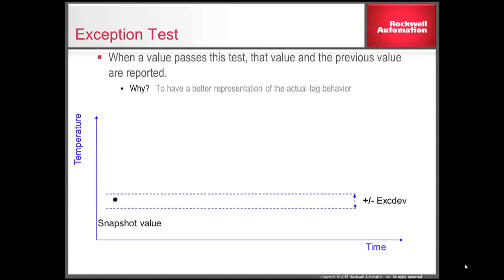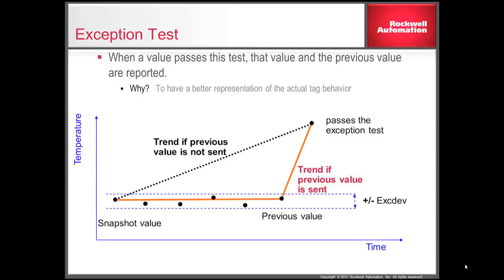The first step is the exception test. This test filters all values that only differ slightly from the previous value. When a value passes this test, that value and the previous value are reported. The snapshot and previous values are saved in order to produce an accurate trend of the raw data.